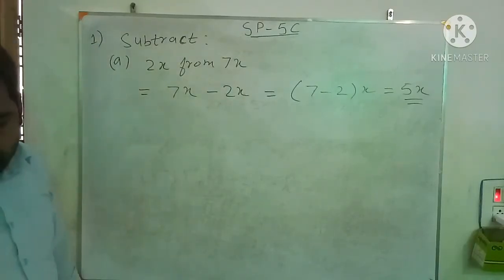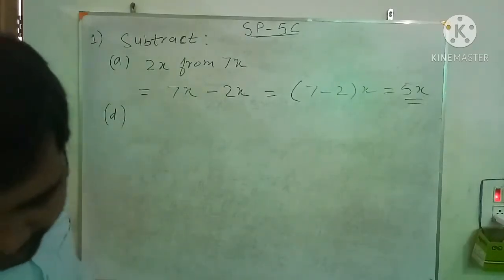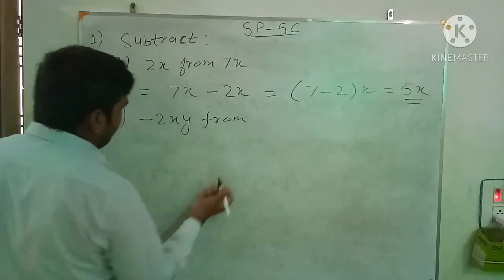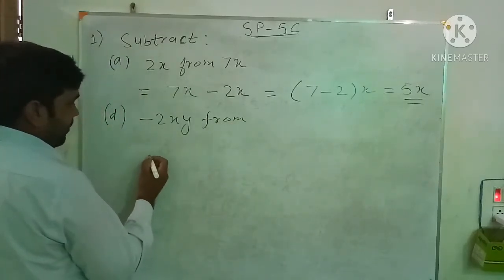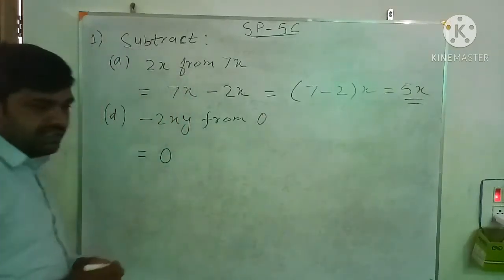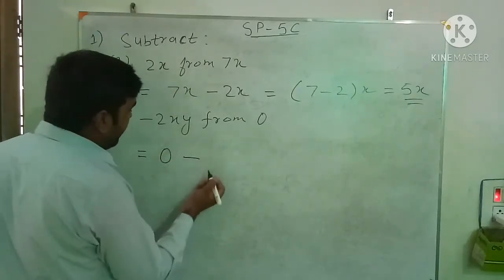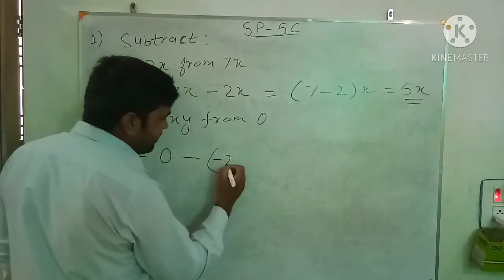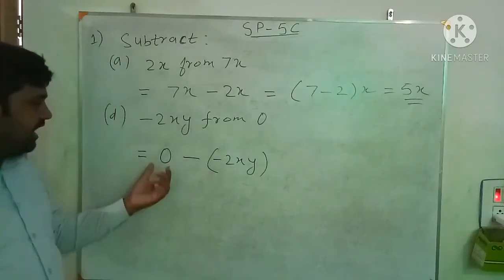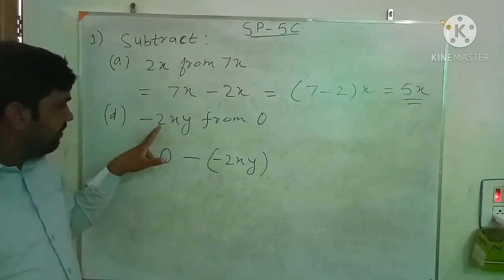Now question 1d: subtract minus 2xy from 0. From the number written after 'from', which is 0, you write it first. Then subtract minus 2xy. So it is 0 minus, and what we have to subtract is the negative term minus 2xy.